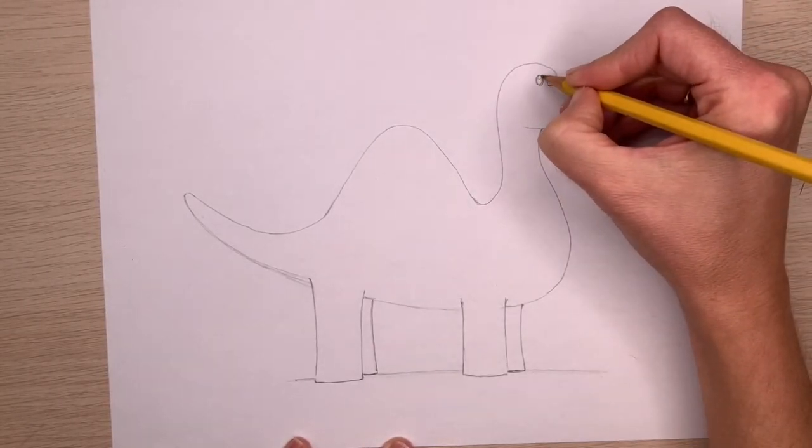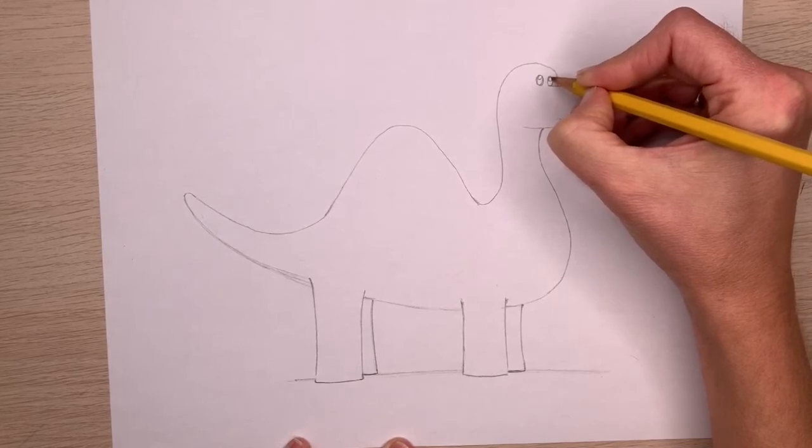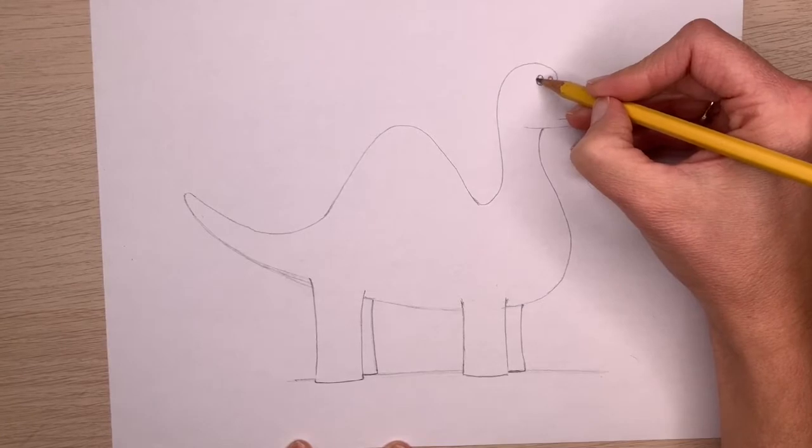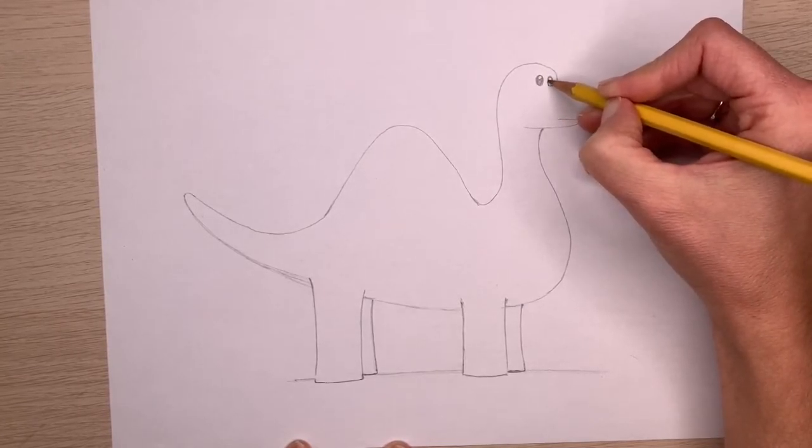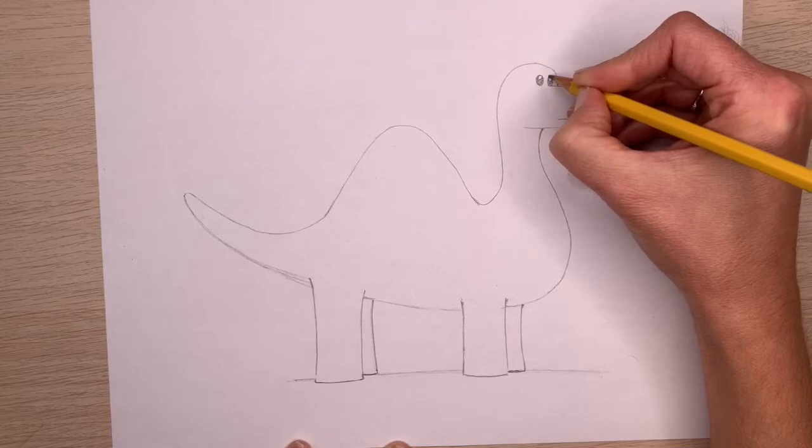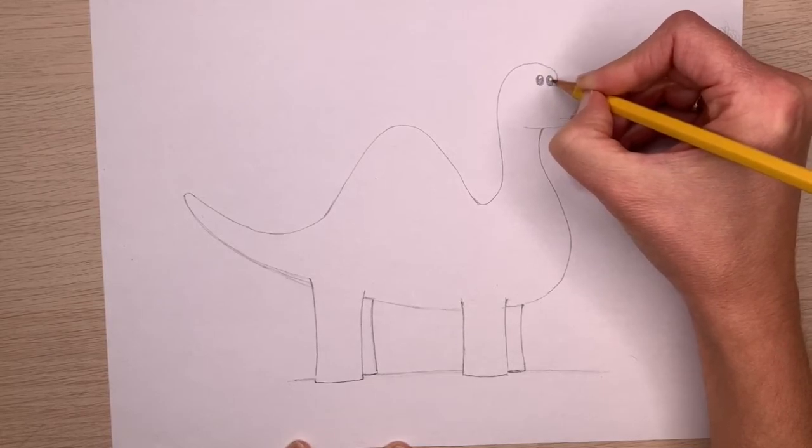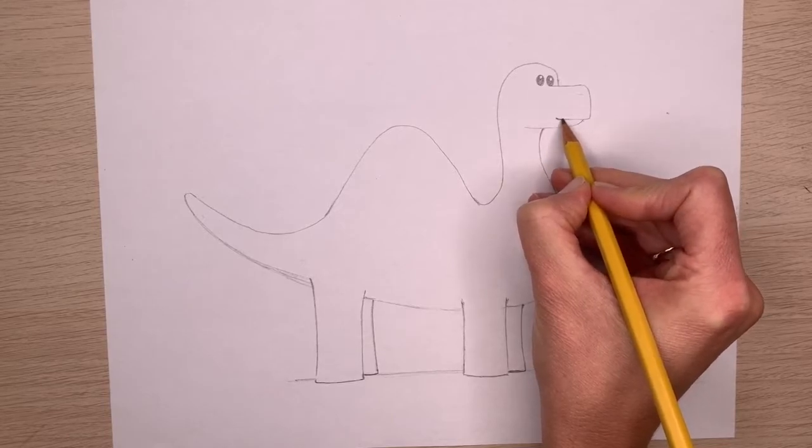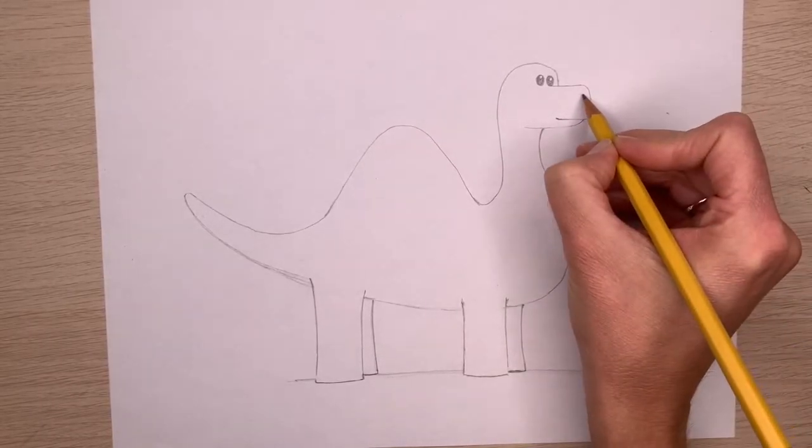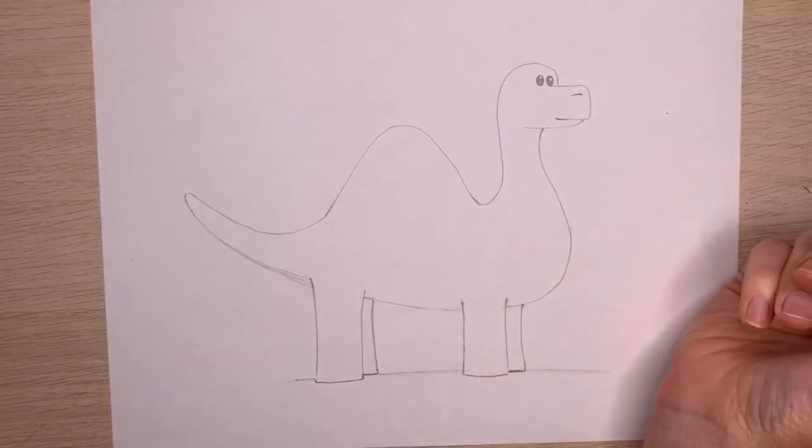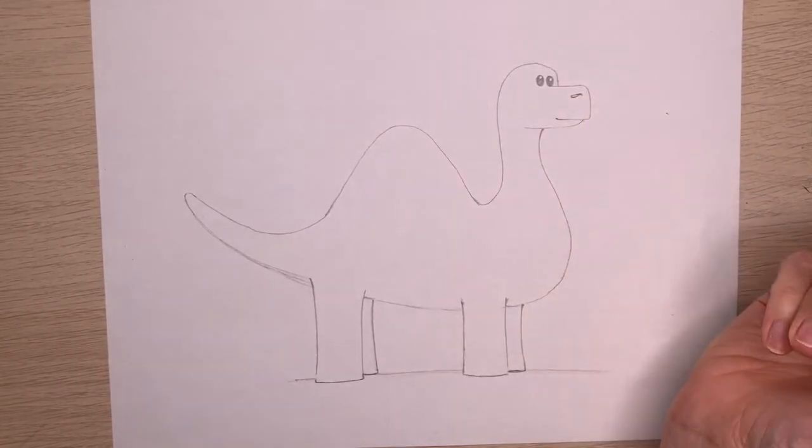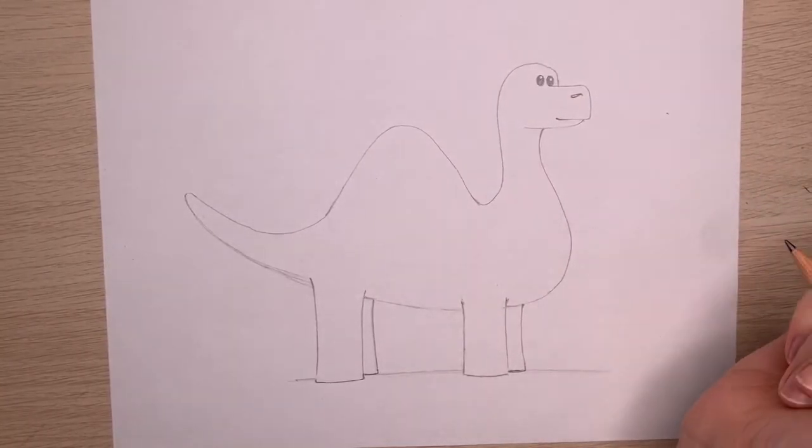And then you can add a tiny highlight circle to each eye and make sure that you leave that tiny circle white. And the rest of it you can color in nice and dark. You can curve up that smile line if you want your dinosaur to be more smiling. And then also add a nostril. This could be a line or a circle or an oval or a triangle. You decide what kind of nostril your dinosaur has.